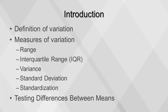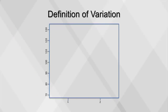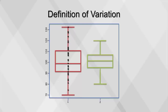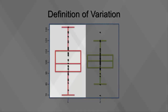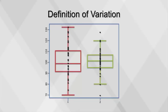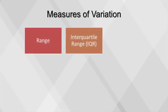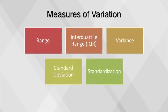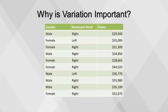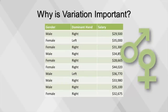This video will cover variation, including a definition of variation, and the measures of variation: range, interquartile range, variance, standard deviation, and standardization, as well as testing differences between means. Variation refers to how spread out the values are for a variable. Variables that have values that are spread out have higher variation, while variables with values very close to the mean have lower variation. Using an example of salaries by gender, a question arises: do men make more than women? Using the principles of variation will help us to answer this question.